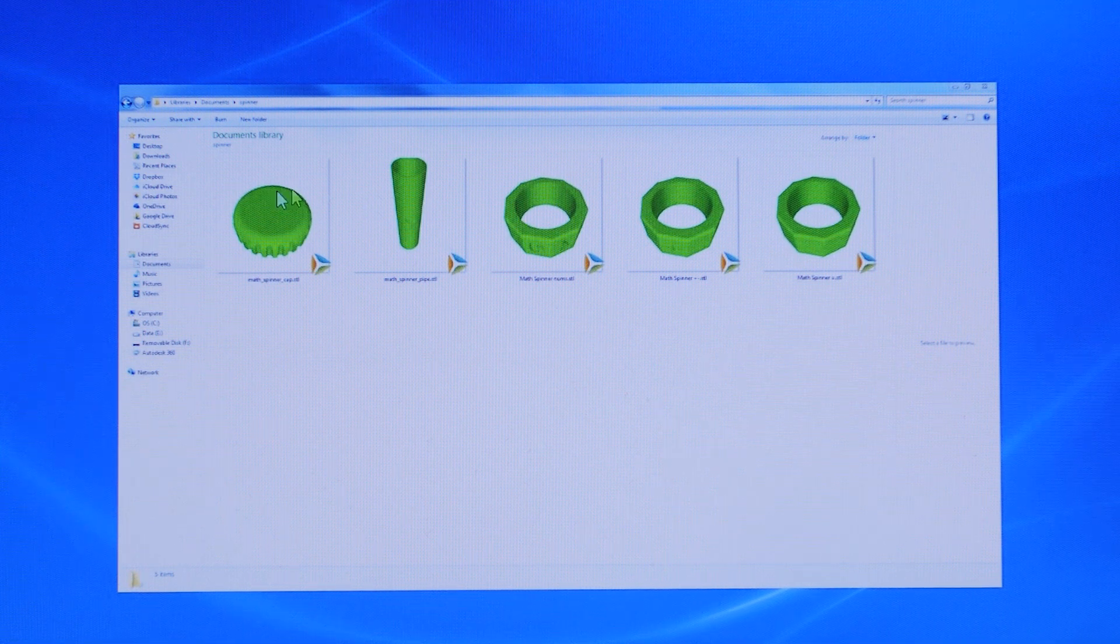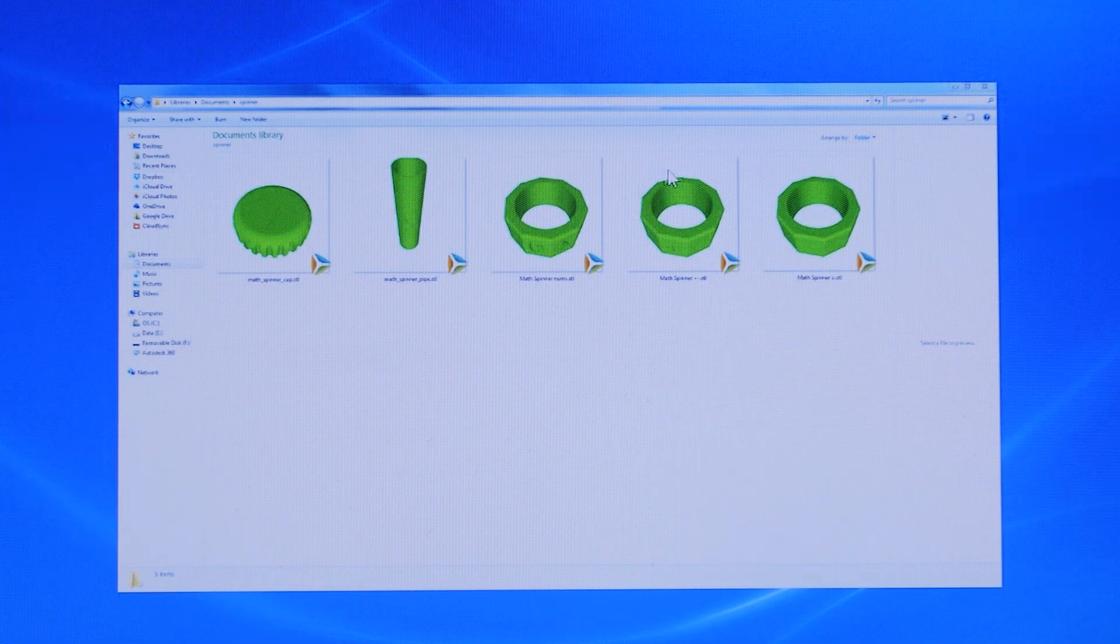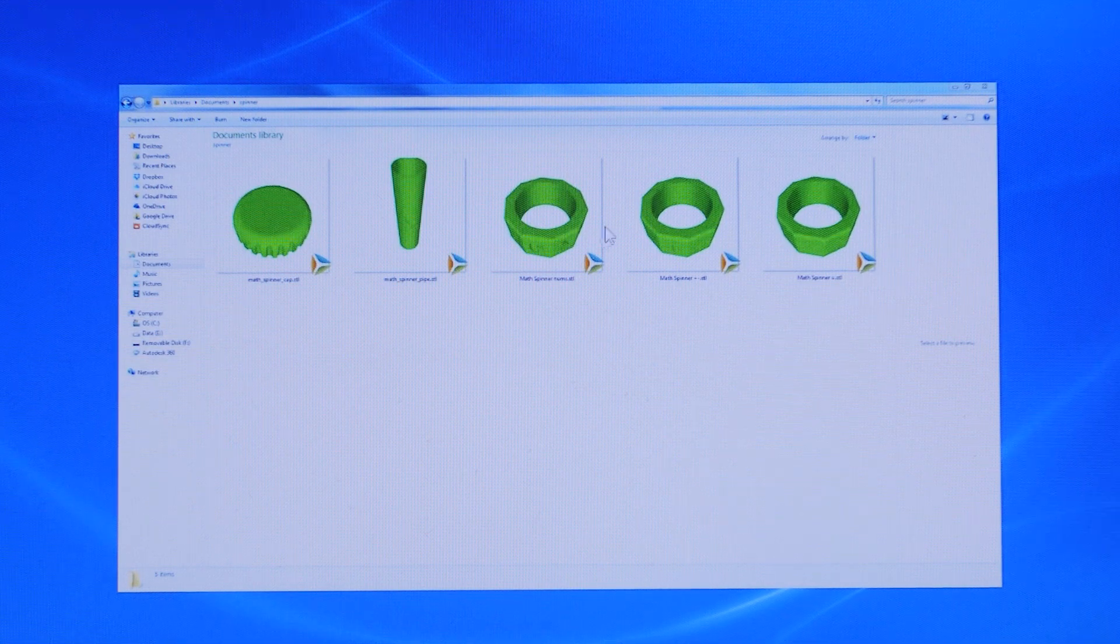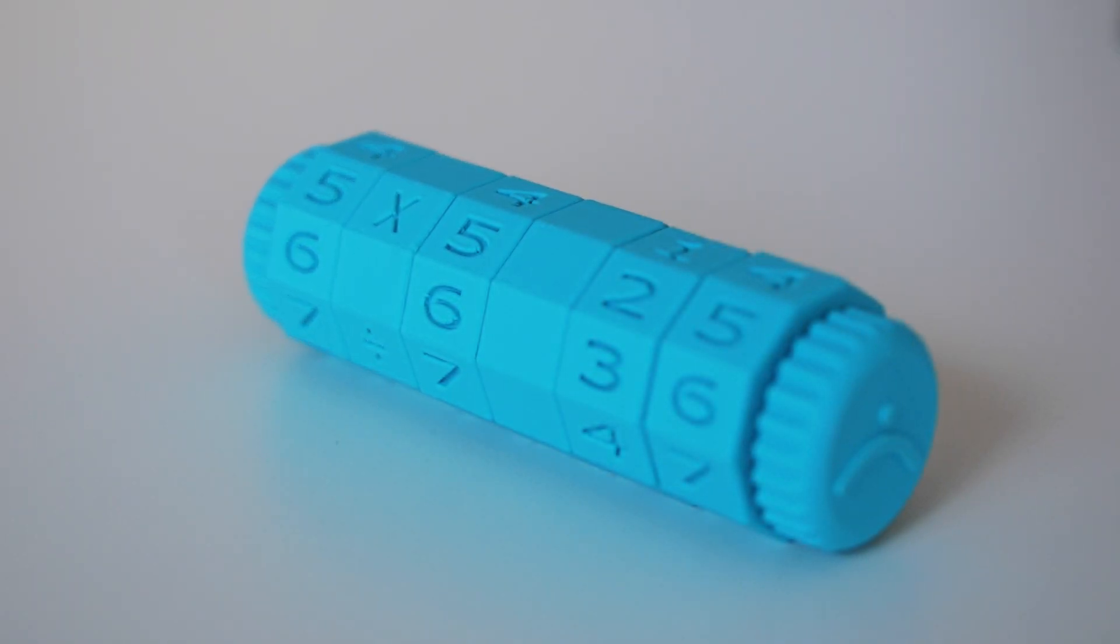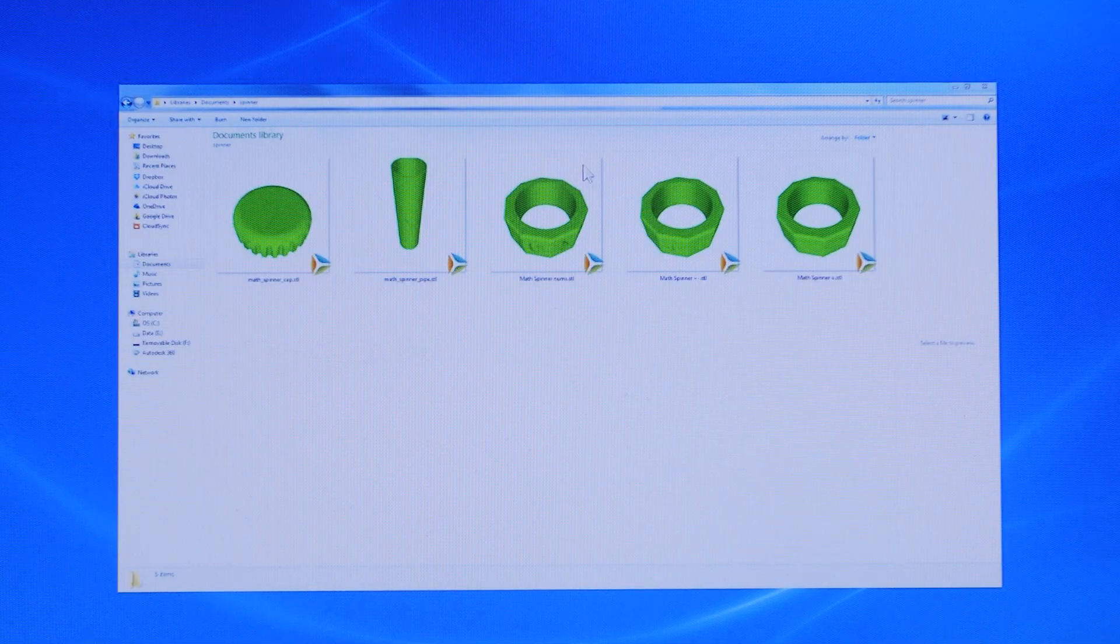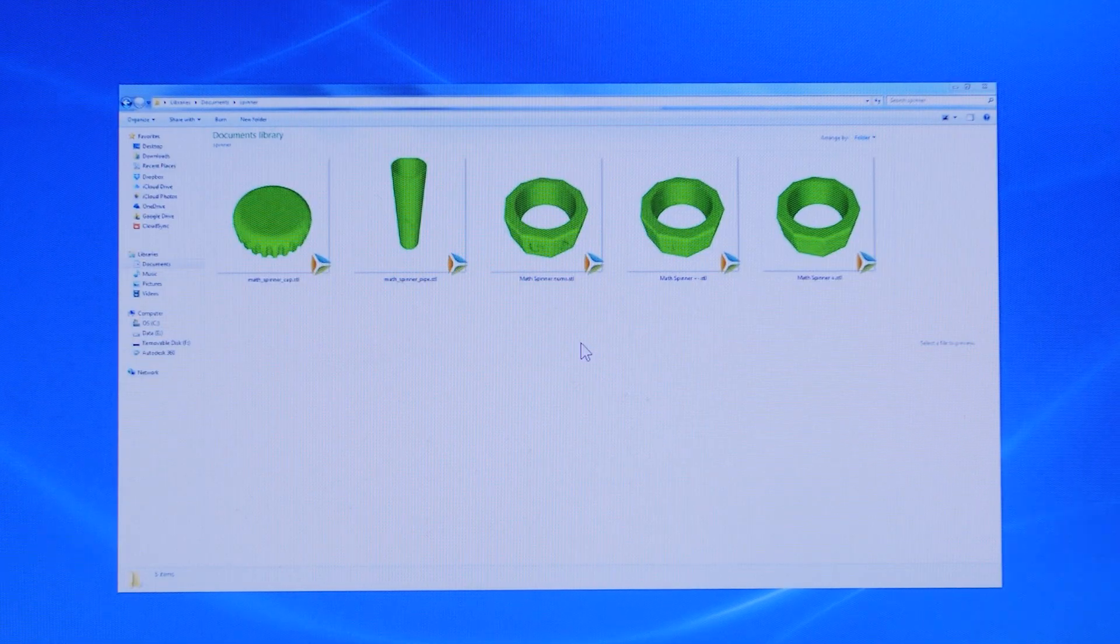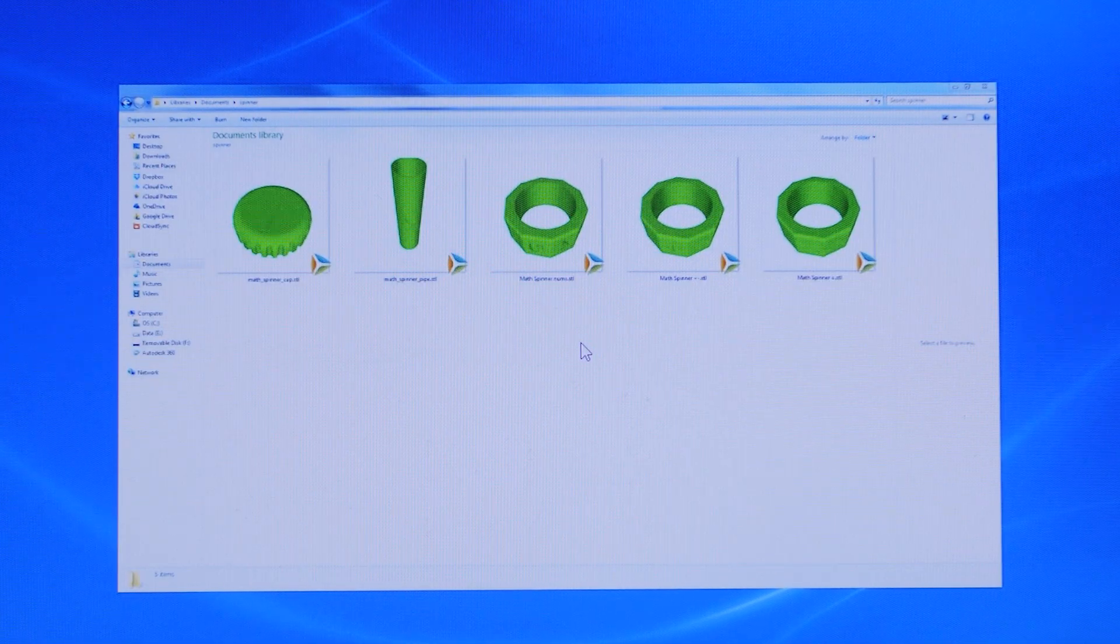The pipe itself, the cap, the plus symbol, the equal symbol, and the numbers. As you can see in the final math spinner, there are four different sets of numbers, but only one numbers file. We'll talk about how we will deal with this. Let's go through each of the three steps.